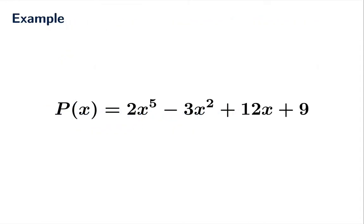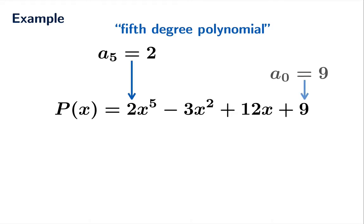Here's an example. This appears to be a degree 5 polynomial. 5 is the highest exponent. The lead coefficient a sub 5 in this case is 2. The constant term a sub 0 is 9. The linear term a sub 1 is 12. The quadratic term a sub 2 is negative 3 because that's minus 3, so the coefficient is negative 3. Notice the coefficients a4 and a3 are actually zero because there's no cubic term and no fourth degree term.